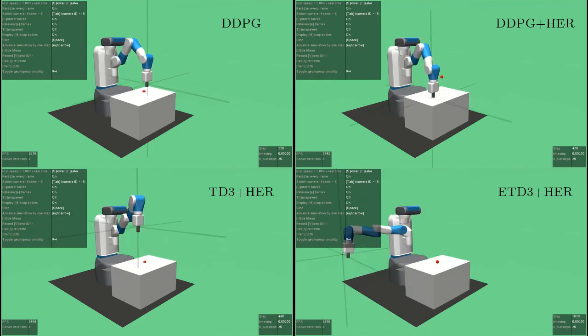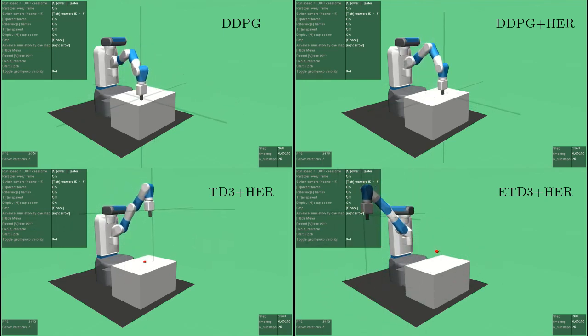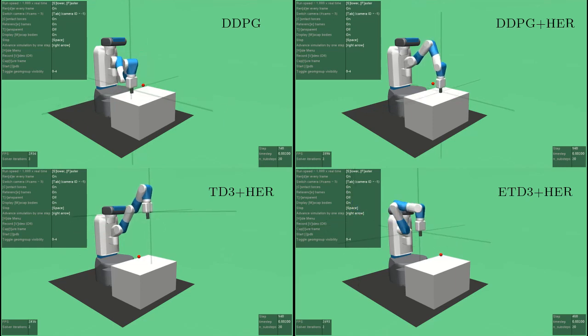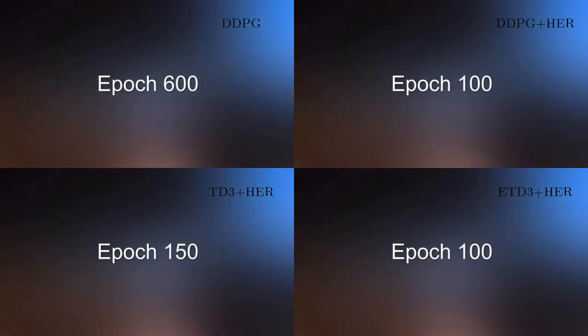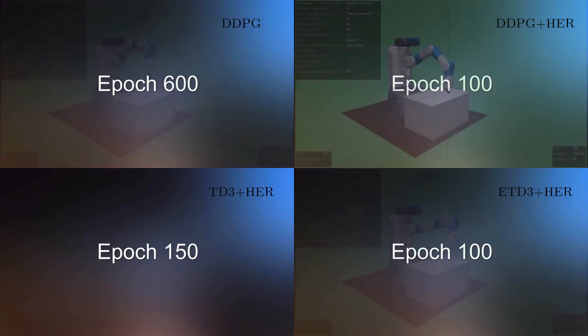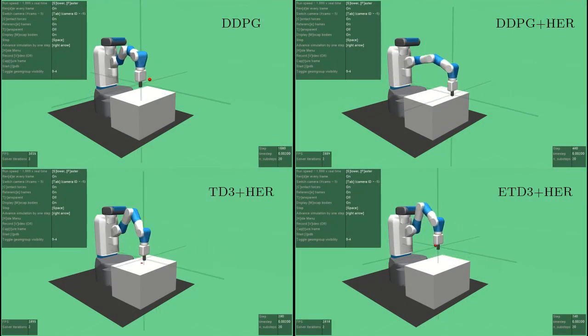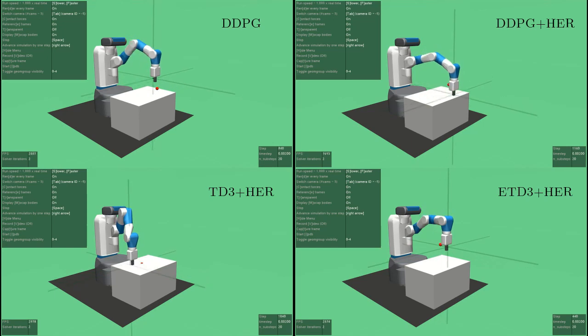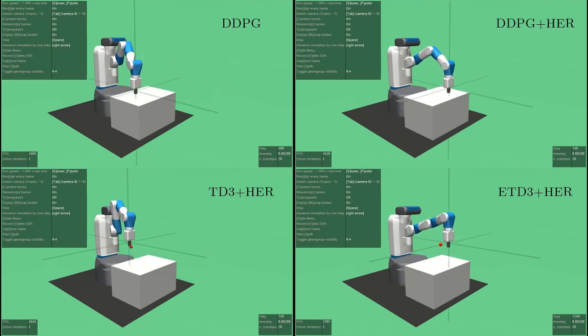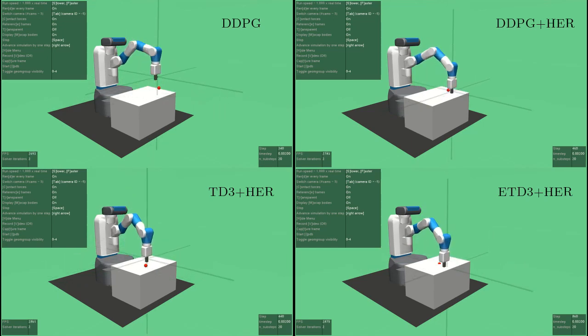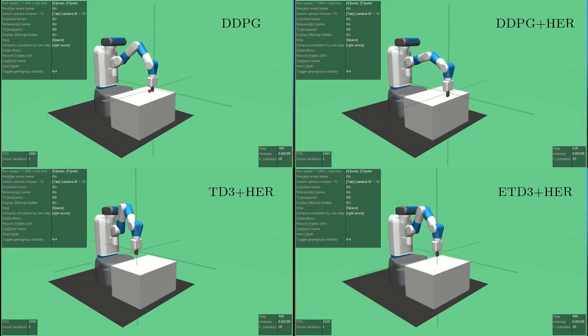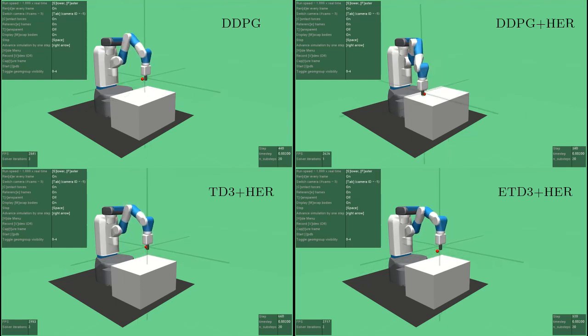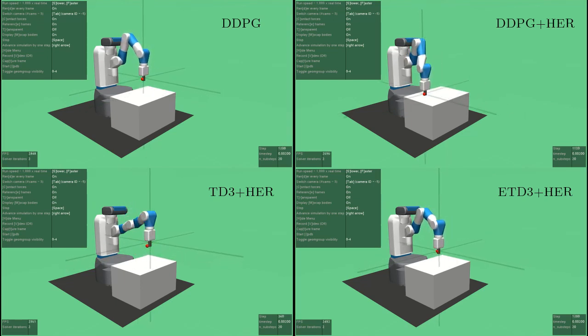Here you can see the performance of the four different algorithms that we implemented. You can see how DDPG takes a while to begin converging, and it takes around 600 epochs to reach the same performance as the other algorithms do at 100. At this point, all the algorithms have converged and have learned how to move to the desired spot, which is represented by the red dot.